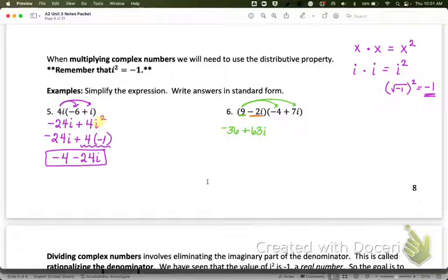So we'll first do 9 times negative 4 and 9 times 7i. So I get negative 36 plus 63i. And then I distribute negative 2i. Don't forget the negative. Negative 2i times negative 4. So that is going to be plus 8i and minus 14i squared. So all of this is going to stay the same.